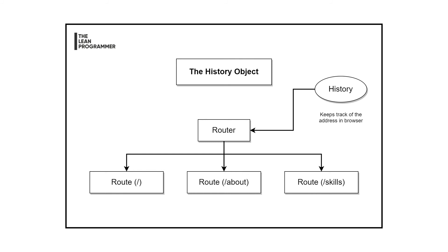Based on that location, it serves the appropriate content — that's what happens in client-side routing. After watching this video you should be able to explain to any friend what the history object is, what React Router is, and the difference between client-side and server-side routing.